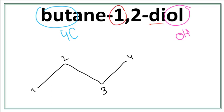One of them is on the first carbon, and the other one is on the second carbon. So we have an OH here, and we have an OH here.